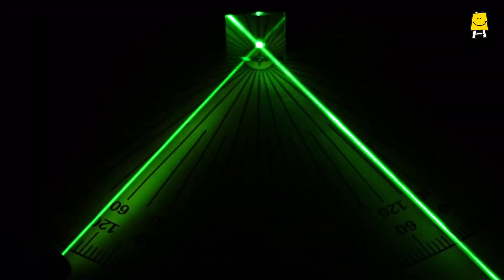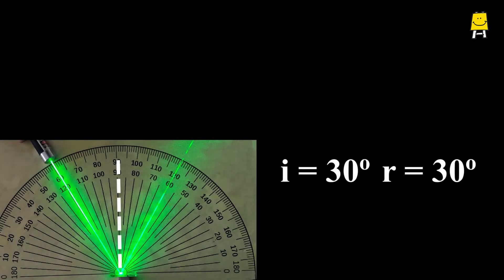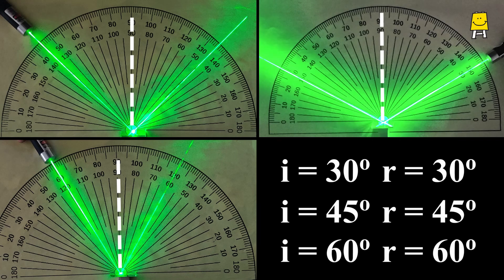Try this out yourself with different angles of i and measure the angle r in each case. We tried it for 30 degrees, 45 degrees and 60 degrees of angles of incidence.